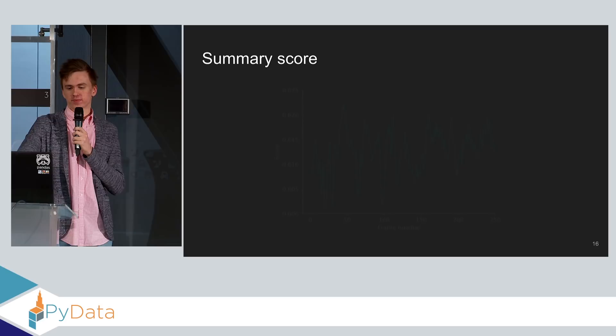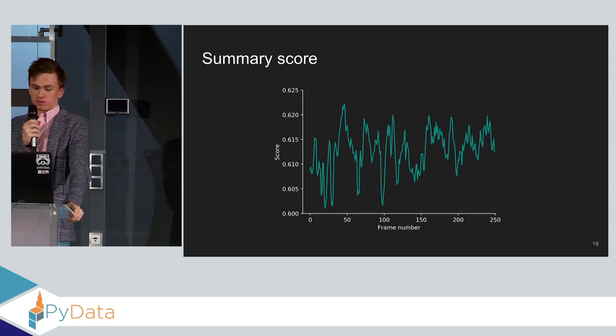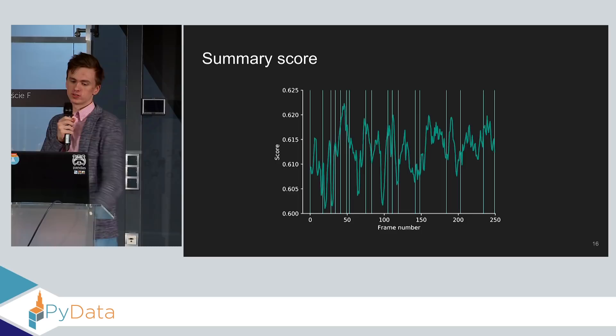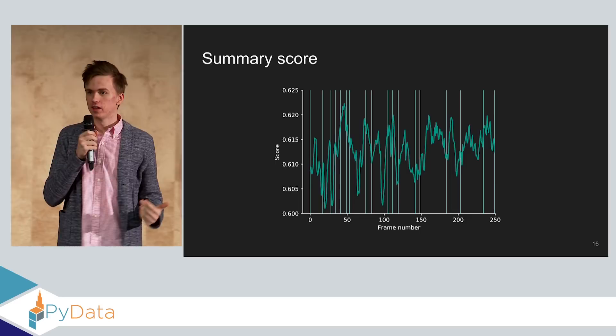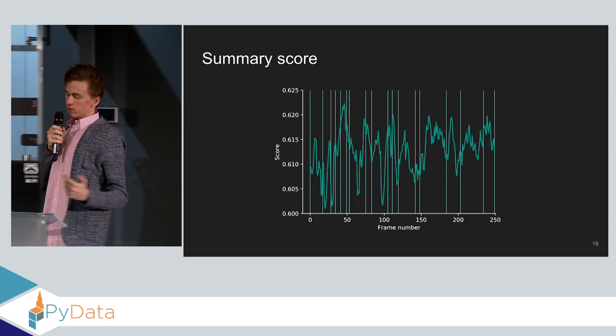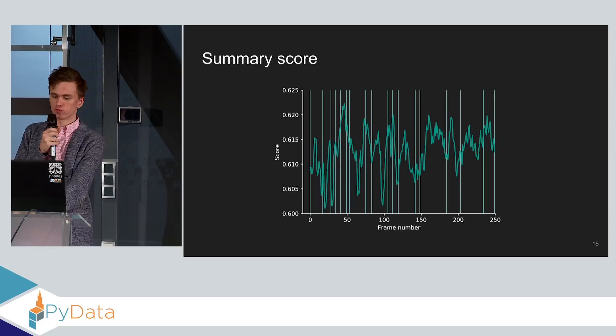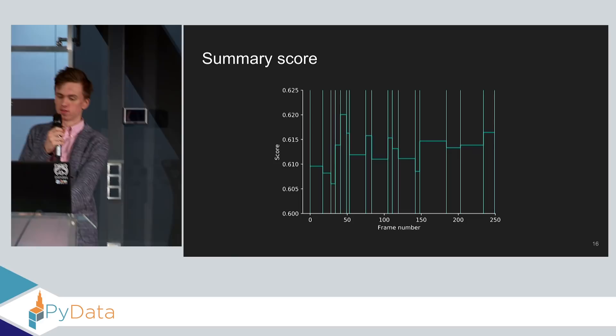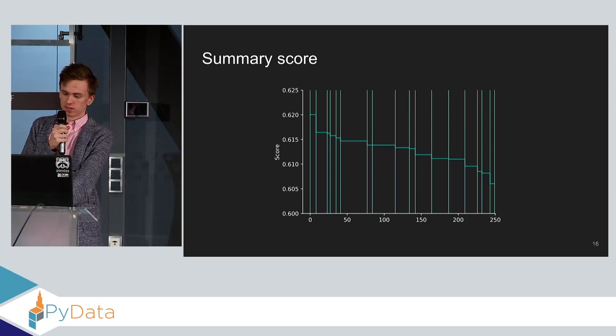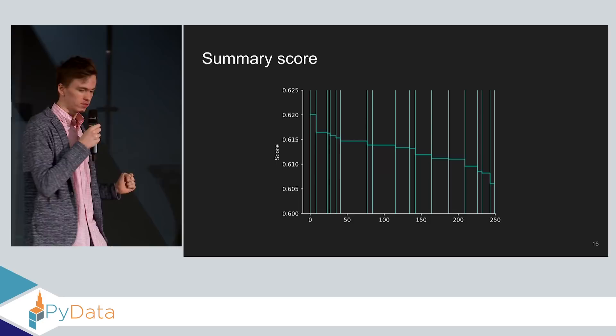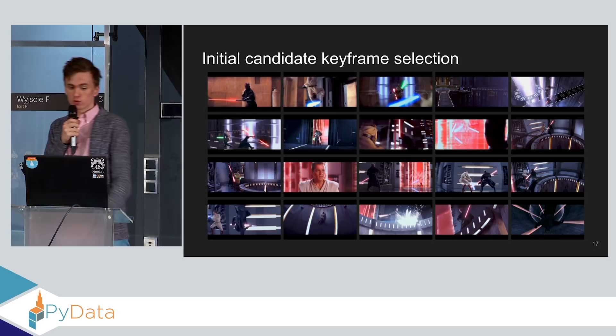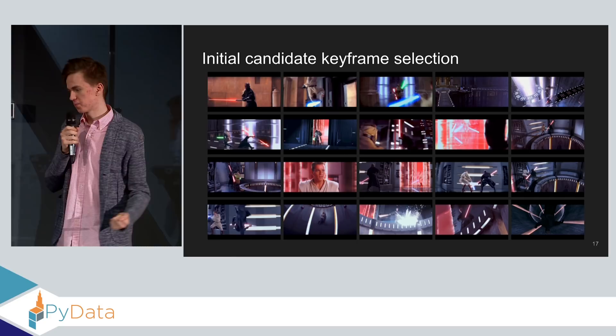That's why we have our next step, temporal segmentation. We have our scores and to preserve some diversity, we first segment the video into segments using kernel temporal segmentation algorithm. As you might have inferred from the title, it's based on temporal differences between frames. After segmenting our video, we calculate an average summary score for each segment. And then we rank our segments, so we sort them from top to bottom. And then we select from top 20 segments in our case, one frame with highest summary score. So that's how we get our 20 frames. Well, still too much.